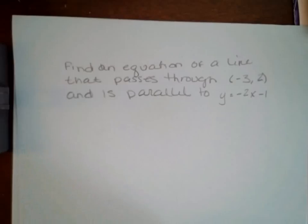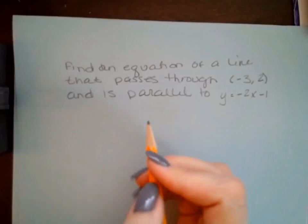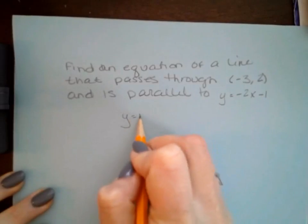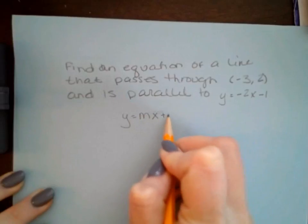In order to do this, we know that we're talking about a line parallel to y = -2x - 1, so this is a linear equation. We can write our equation in slope-intercept form, y = mx + b.